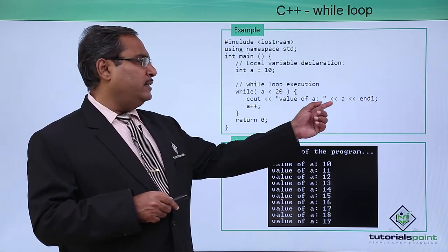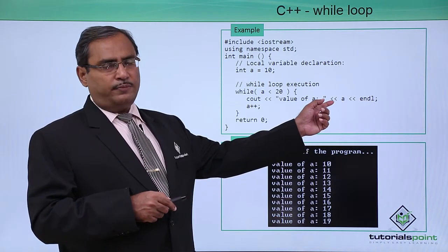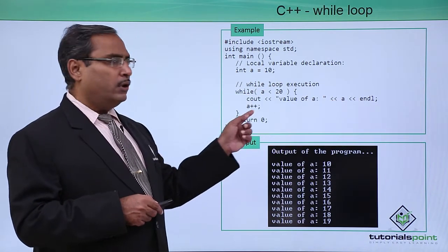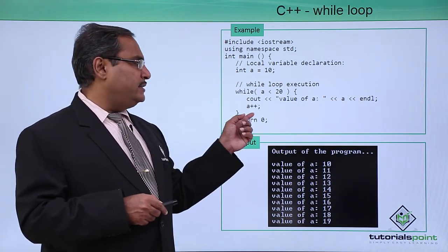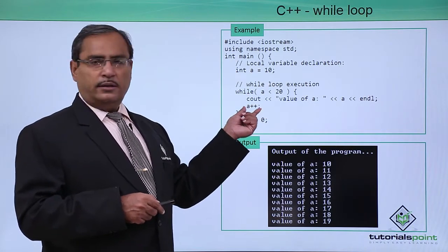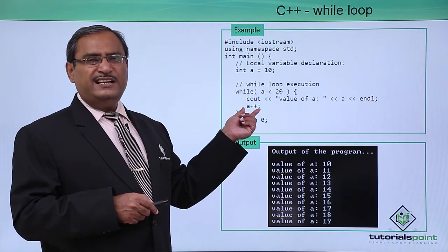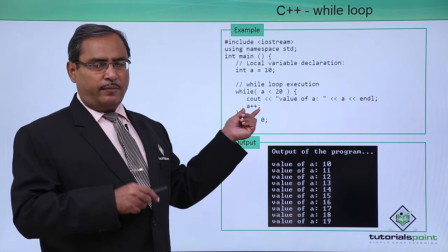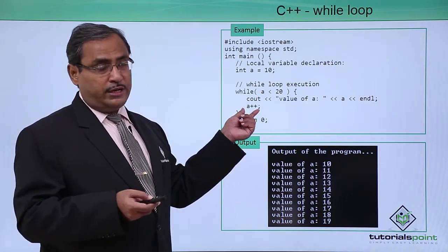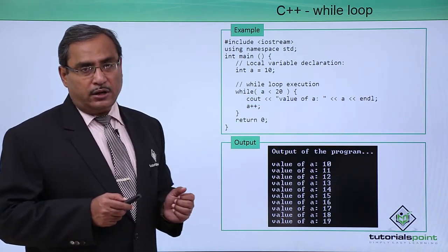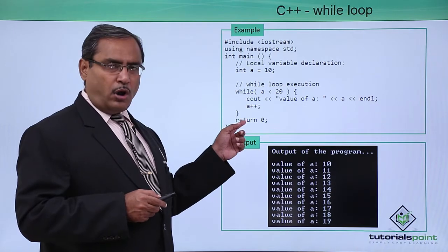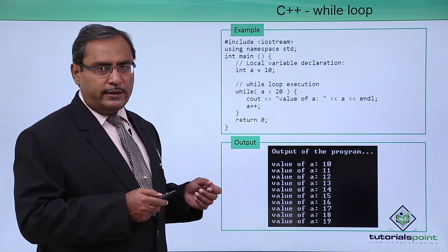As the condition is true, the code will get executed again, so the value of A will get printed as 11. In this way, the loop will go on executing until A reaches 19. But when the value of A becomes 20 — increasing 19 by 1 gives 20 — then 20 is less than 20 is false, so control comes out from the while block and the program gets terminated.